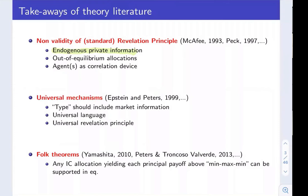Second, out-of-equilibrium allocations play an important role with competing designers. A principal may want to include in their mechanism allocations that on-path she doesn't expect to be selected, but which are there so that if other principals were to deviate, the agents may activate these out-of-equilibrium allocations and inflict punishment on the deviating principal. Standard direct revelation mechanisms could be too restrictive in their ability to permit the principal to correlate the actions with the private information of the agents.